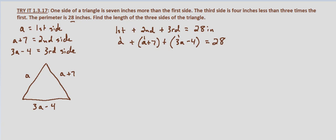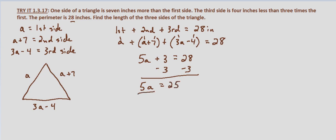Let's combine like terms: A plus A plus three A equals five A. And then seven minus four is three, so five A minus three equals 28, which gives us five A equals 25. We divide both sides by five, and we have A equals five inches.